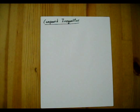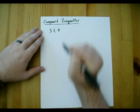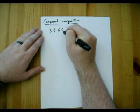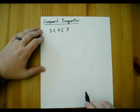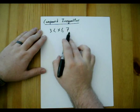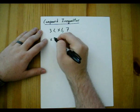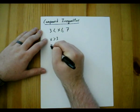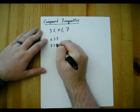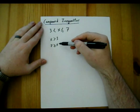Next we're going to look at compound inequalities — these are where we take two or more of the same things we've been working with. For instance, 3 is less than x, but x is also less than or equal to 7. Written as a compound inequality: 3 < x ≤ 7. You can also think of it as two separate ones: x is greater than 3, and x is less than or equal to 7. These are two separate inequalities merged into one.